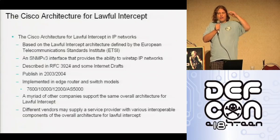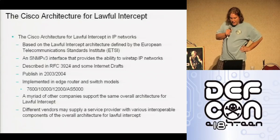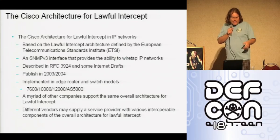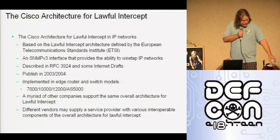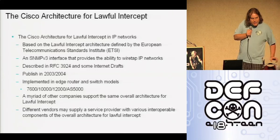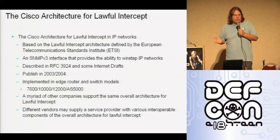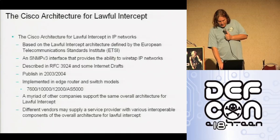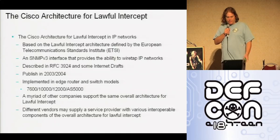Some of the ETSI standards are available online — you can find them on cryptome.org. The interface used is SNMP V3. By sending an SNMP V3 request, you can provision a wiretap. This is available in a number of different edge routers that large ISPs would be using.